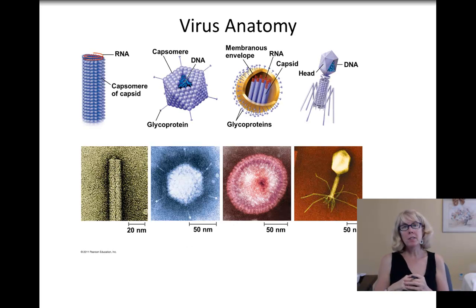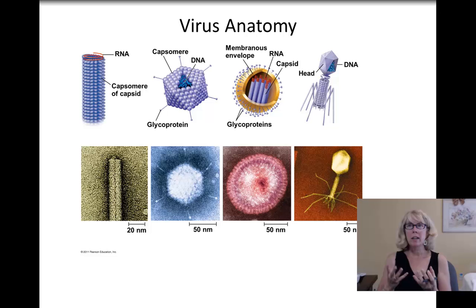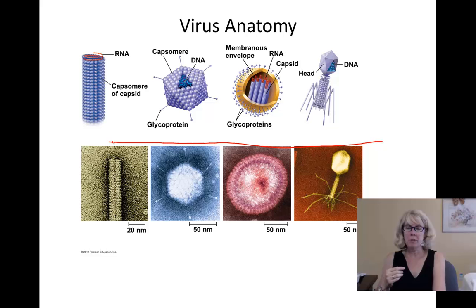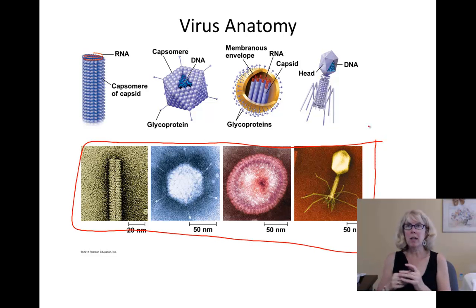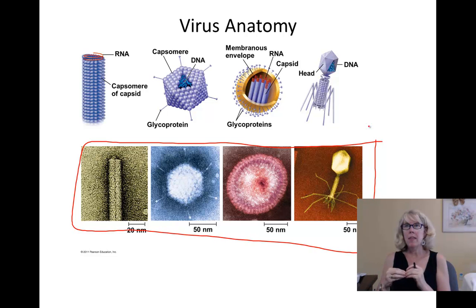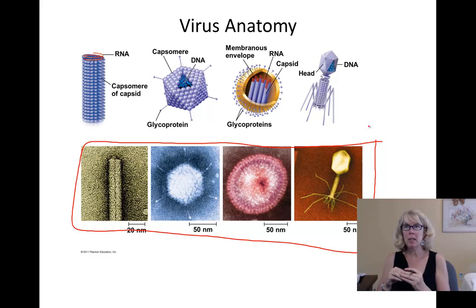A virus is defined as a very small infectious particle consisting of nucleic acid enclosed in a protein coat. Viruses vary a lot in shape and size but they all have either DNA or RNA, and they have a protein coat which is called a capsid, made up of repeating proteins called capsomers.